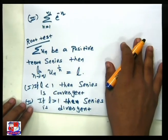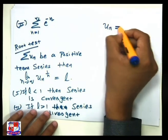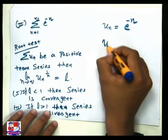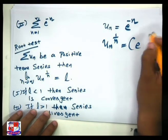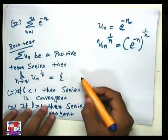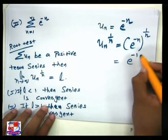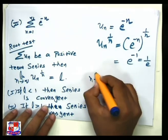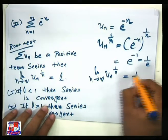Using the root test, we can easily check convergence or divergence. Here un = e^(−n). So un^(1/n) = (e^(−n))^(1/n) = e^(−1) = 1/e. As n tends to infinity, this is a constant term, so the limit of un^(1/n) is 1/e.